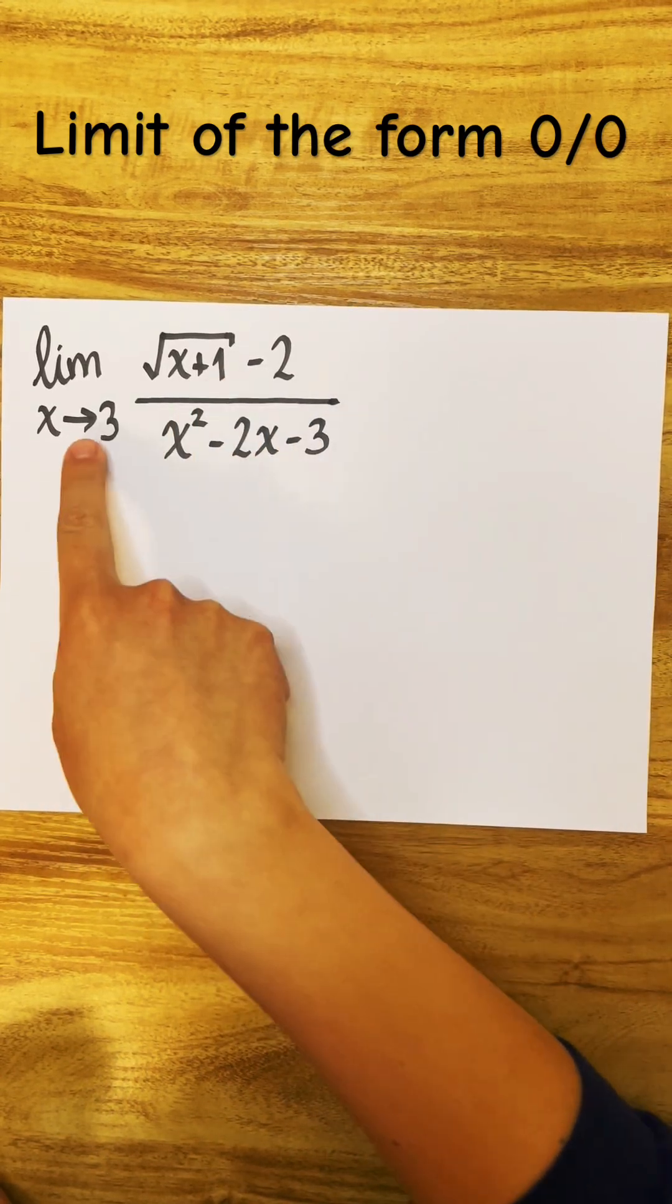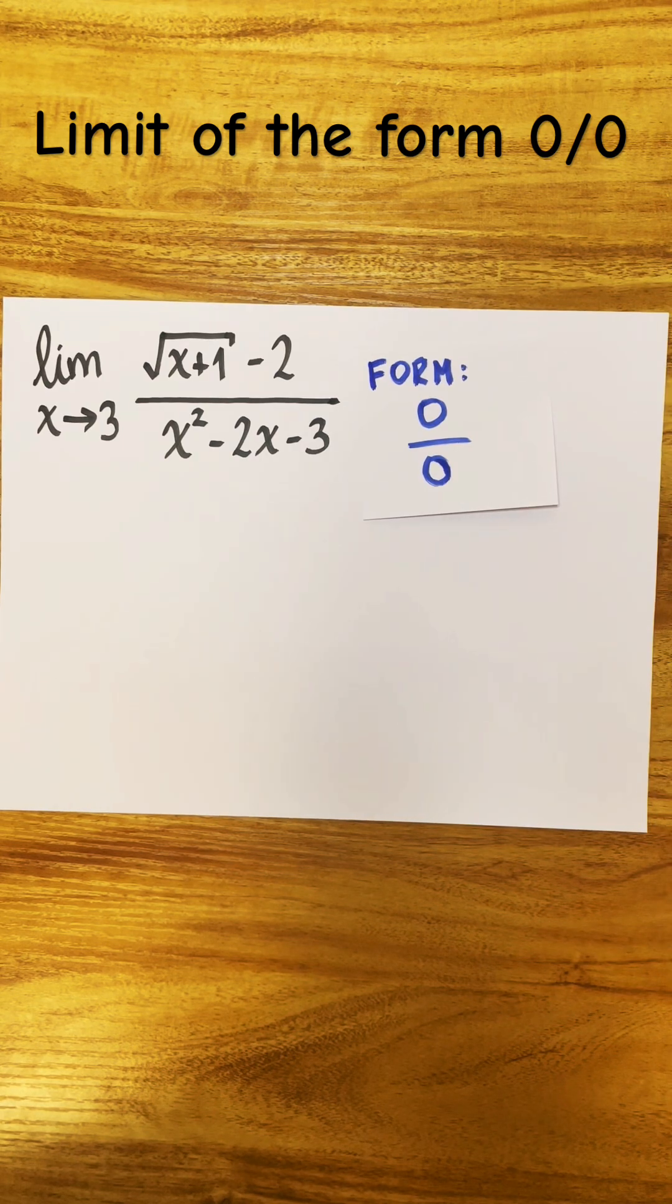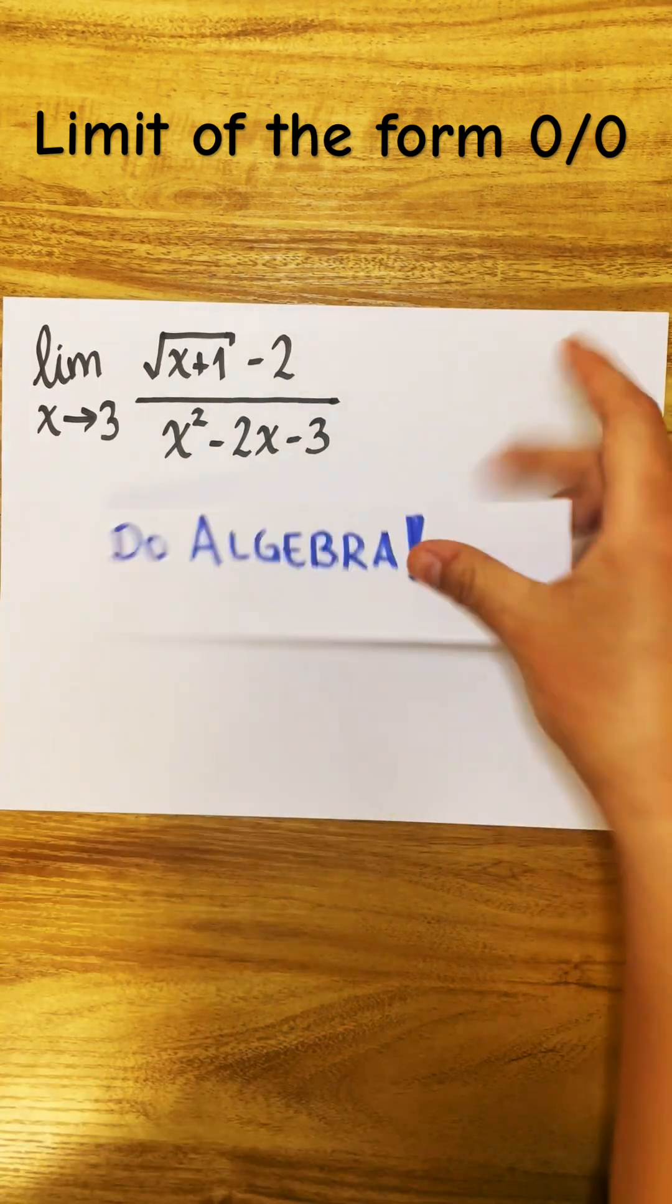We see this limit, and when we plug in 3 on top and bottom, we see that this has the form 0 over 0. Whenever you see a 0 over 0 form, what you want to do is algebra.